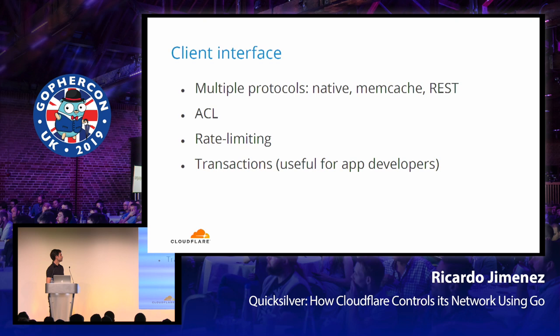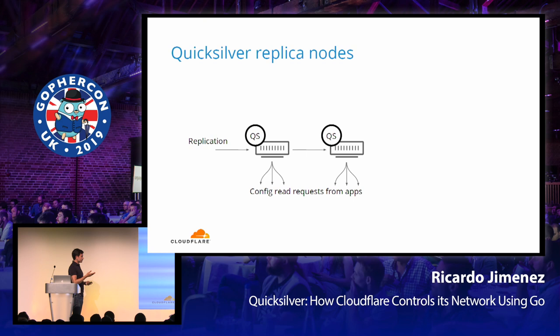Most of the servers in Cloudflare run a replica of Quicksilver. That means this software is constantly receiving a replication stream over the network, receiving updates to apply changes to the config. Hopefully all servers have the same view of the data set. At the same time, in real time, they're serving config read requests from the software running on each of our servers to run the CDN.